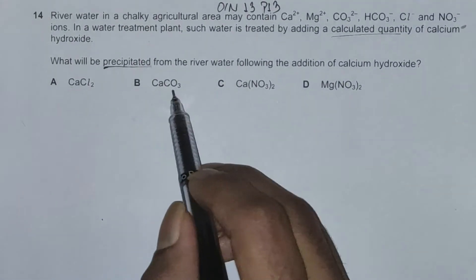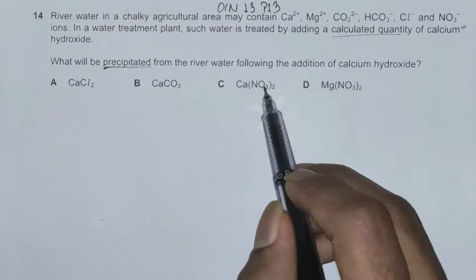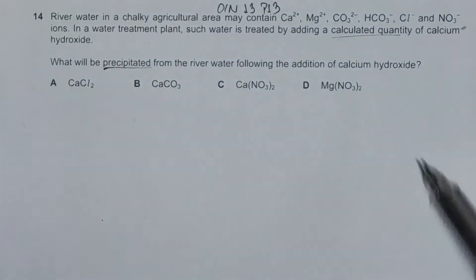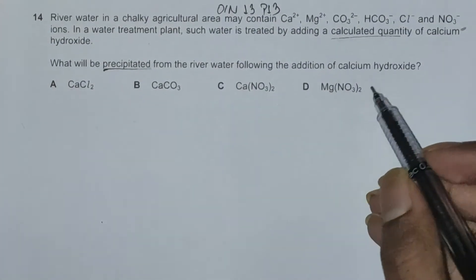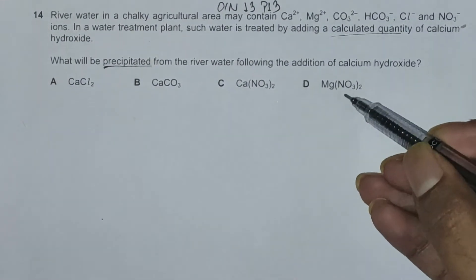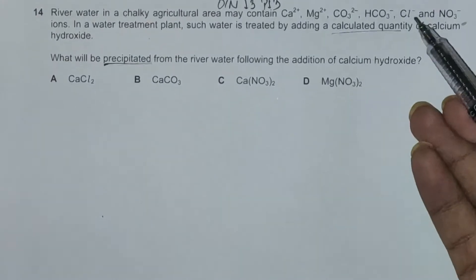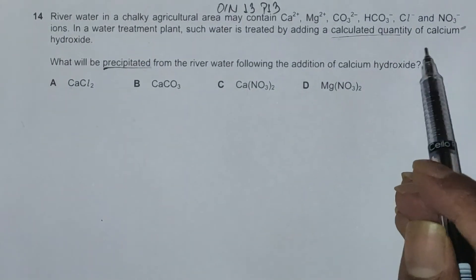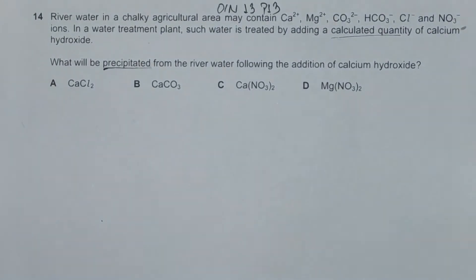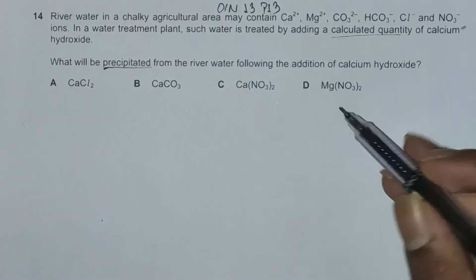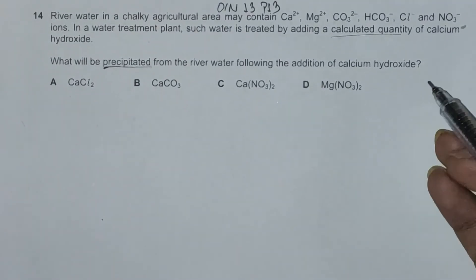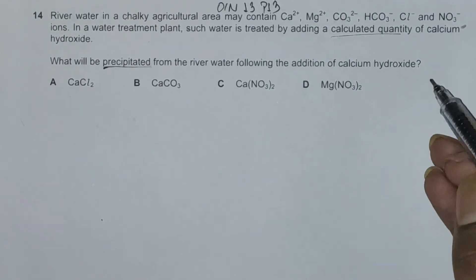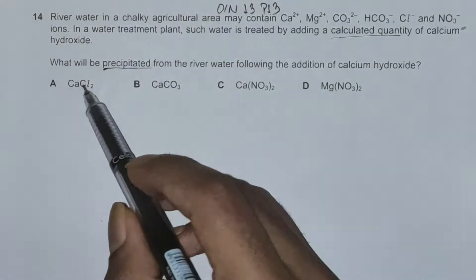We have to check whether calcium chloride, calcium carbonate, calcium nitrate, and magnesium nitrate are soluble in water or not. If they are soluble, they form no precipitation, and we simply rule out that option.